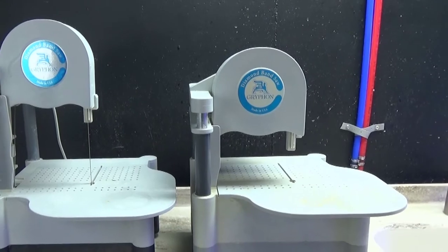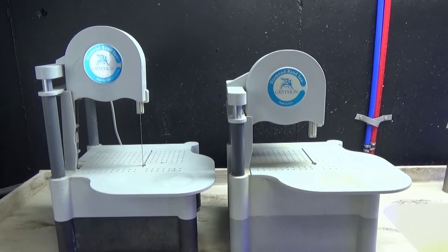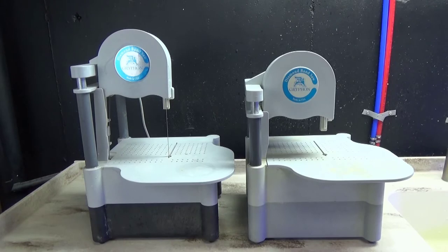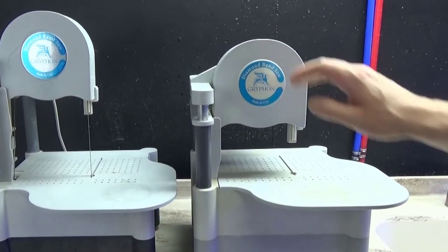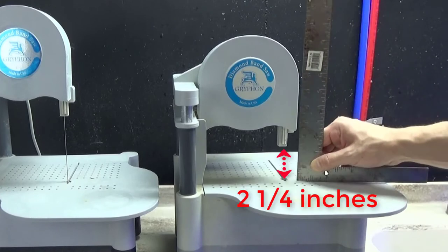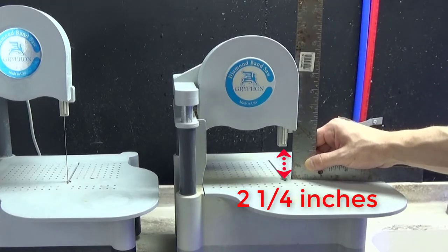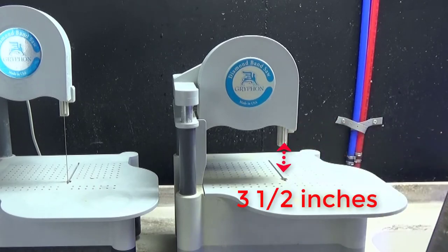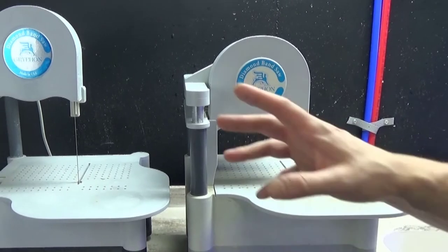The price is maybe fifty dollars difference for the extra clearance. So if you're just doing small frags, little zoanthid rocks, discs, frag plugs, you can get away with a smaller saw. This one has a clearance of about two and a quarter inches, and you can actually remove this guide for a little extra clearance.